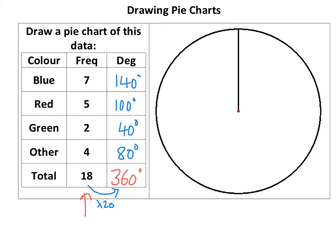Now 140 would be about there. What I would do is make sure you use a ruler. That's 140. I would write down the degrees and label. Now next one's red. Now 100 degrees would be about there.